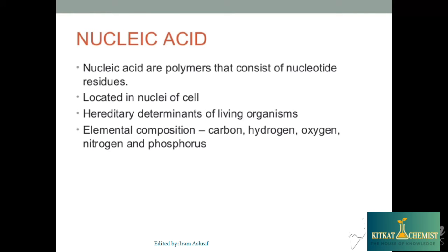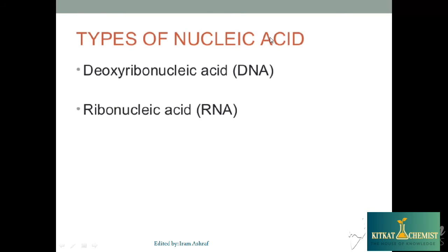Nucleic Acid is a polymer of nucleotides. It is responsible for heredity determination. The elements present are Carbon, Hydrogen, Oxygen, Nitrogen, and Phosphorus. There are two types of Nucleic Acid: Deoxyribonucleic Acid — DNA — and Ribonucleic Acid — RNA.